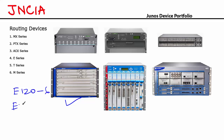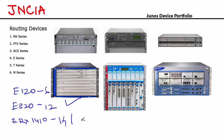In the E series, the E320 has a capacity of up to 320 Gbps with 12 line modules. Moving up the product line, you have the ERX1410 with a capacity of up to 10 Gbps with 14 line modules, and the ERX1440 with a capacity of 40 Gbps with 14 line modules. Those are the important routers in the E series.